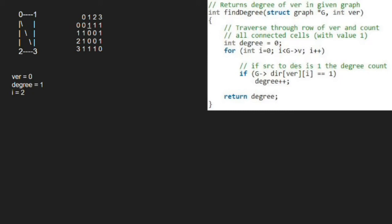Then, i will be 3. Dir at 0,3 is also 1. Hence, we increment degree. So, now degree will be 3.